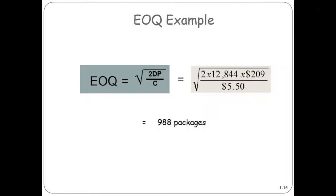So you do your math. It's 2 times 12,844, which is the total demand, times the order costs divided by the carry costs per unit. You do the math and come out to 988 units. That is your economic order quantity.